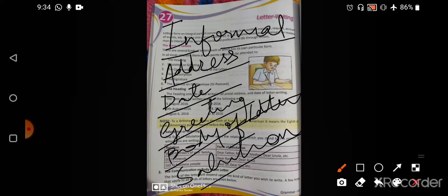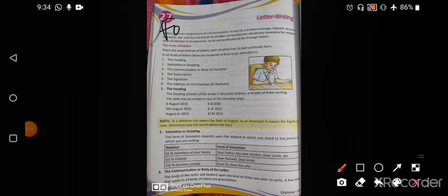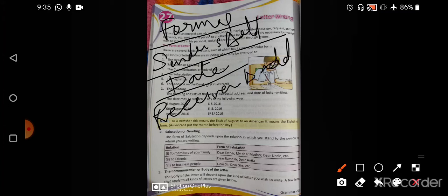When we come to the formal letter, let me tell you how formal letter is different from informal one. Whenever we are writing formal letter, first we write the sender's address, which is me only. Then we write the date. Then we write receiver's address.